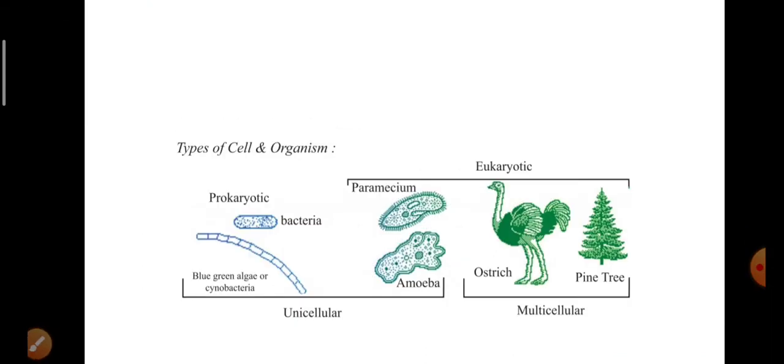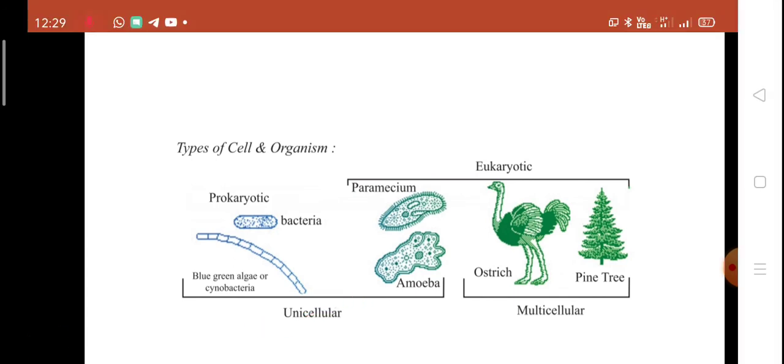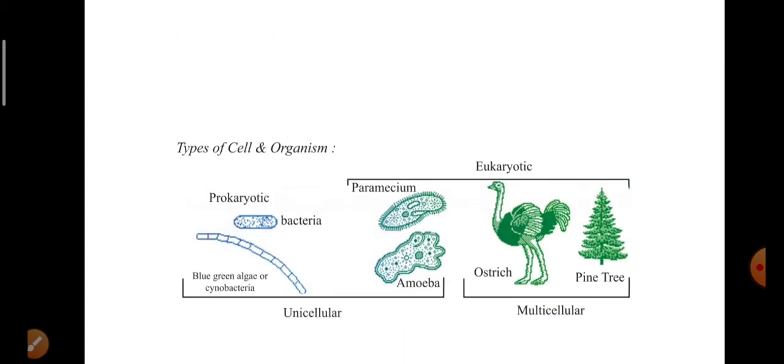Based on the number of cells, we can divide organisms into two parts: unicellular and multicellular. Unicellular means an organism consists of only one single cell. Some other organisms consist of cells numbering from a few to billions. Such organisms are called multicellular. For example, algae contain a few cells to a few hundred cells, while most plants and animals consist of several billion cells.